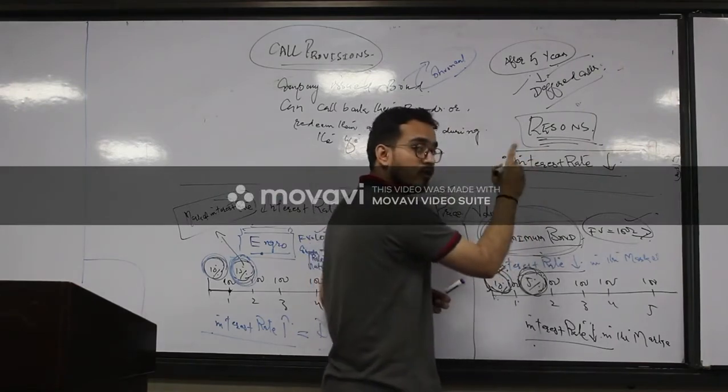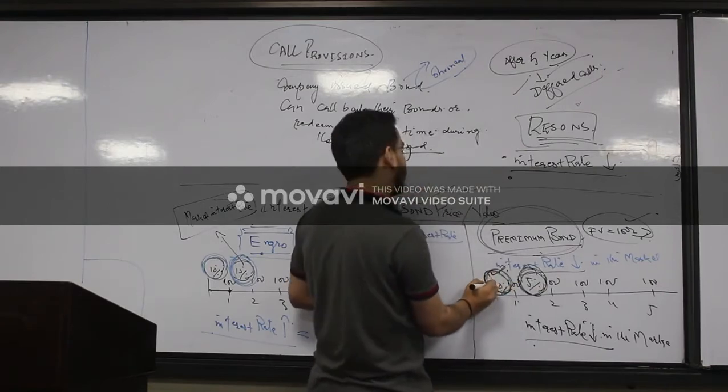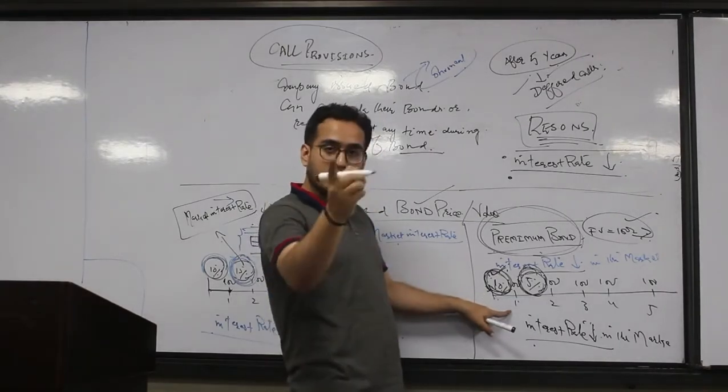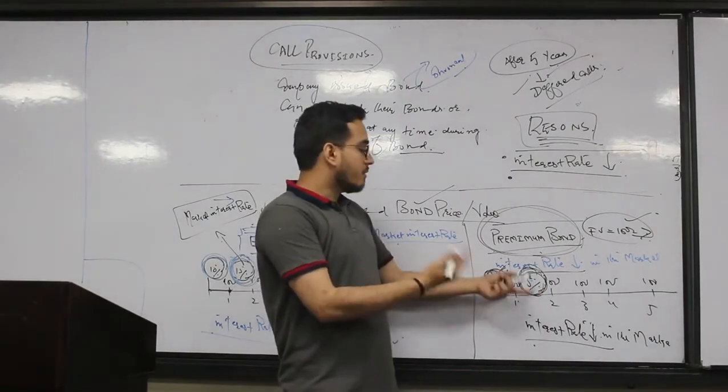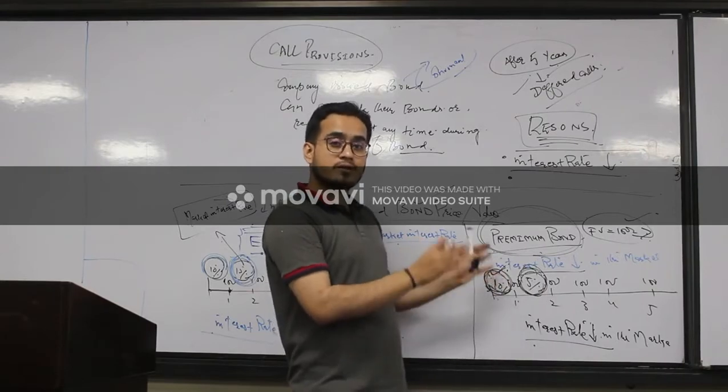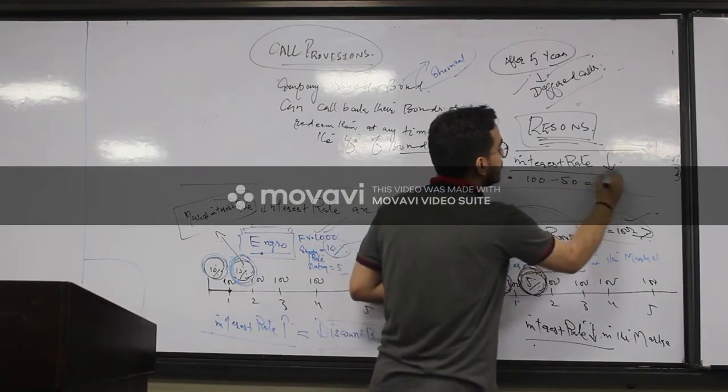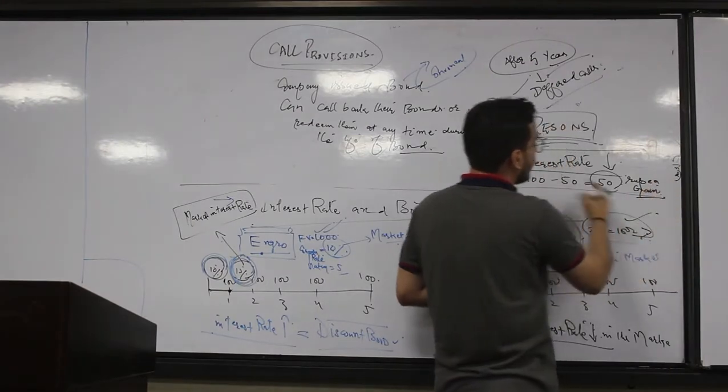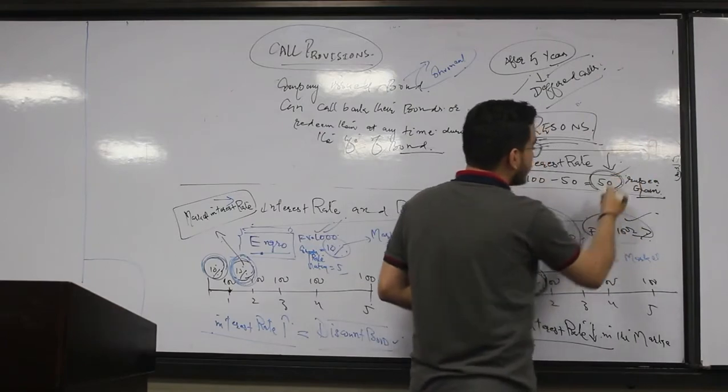And company will have a benefit. When companies issued that bond, they were supposed to pay ten percent coupon or hundred coupon to you. But now after five years, the interest rate goes down five percent. So now if company is going to again issue the same bond, they will be benefiting hundred minus fifty equal to fifty rupees gain on their new issue, because their cost will be decreased by fifty rupees.